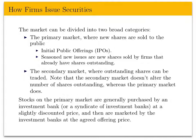Stocks on the primary market are generally purchased by an investment bank or a syndicate of investment banks. They're purchased at a slightly discounted price and then marketed at an agreed offering price. For example, in the Facebook IPO, investment banks met with Facebook, determined a fair valuation, bought shares at a discount, and then on the date of the IPO sold them at a slight markup at the agreed offering price.